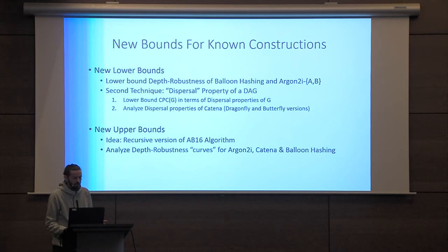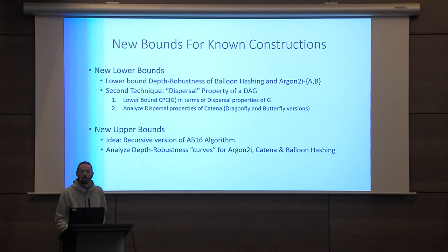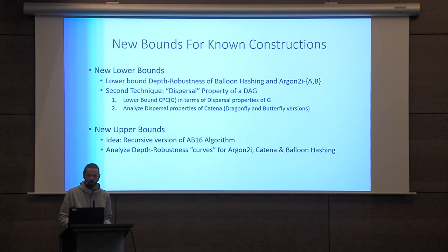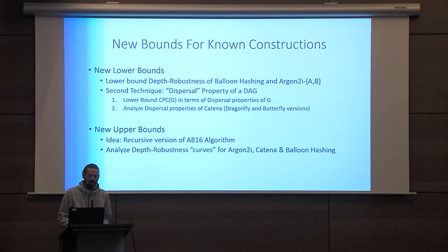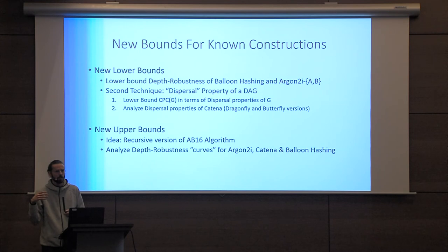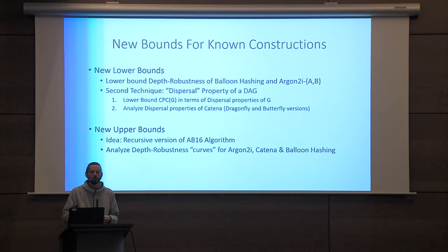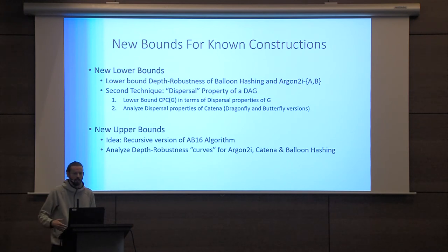We also do several other things, in particular showing lower bounds for known constructions. That boils down to looking at the depth robustness of the underlying graphs, and also another combinatorial property we identify called dispersal, which also gives bounds on CPC. We also take a previous pebbling strategy that gives low-CPC pebblings for certain kinds of graphs, improve on it by applying it recursively, and indeed that gives us improved attacks on some known iMHFs.